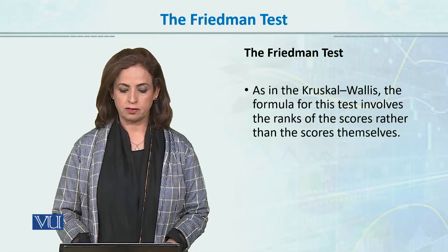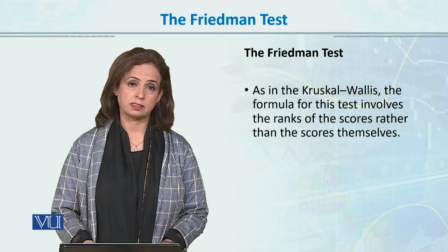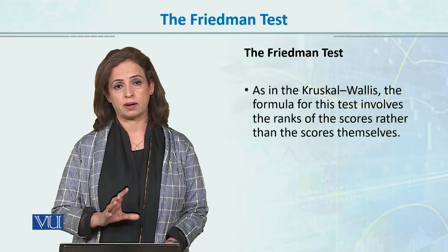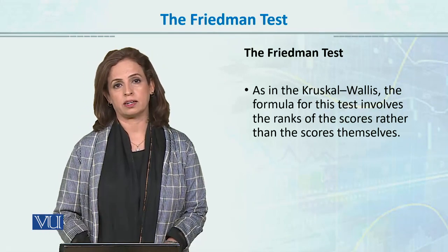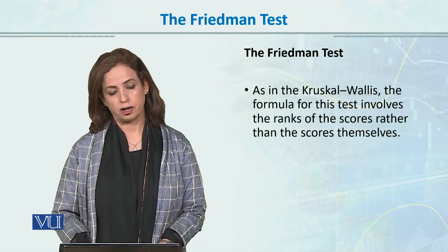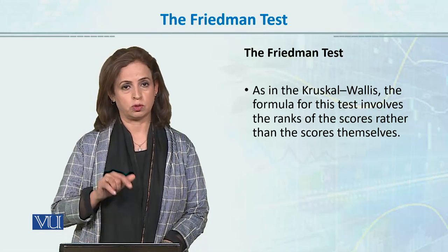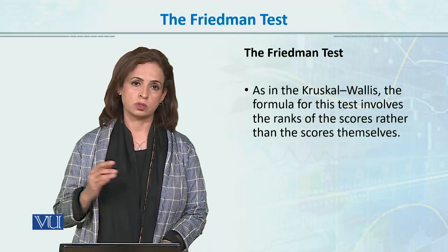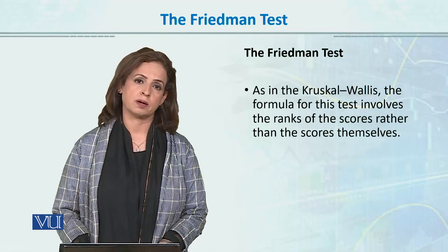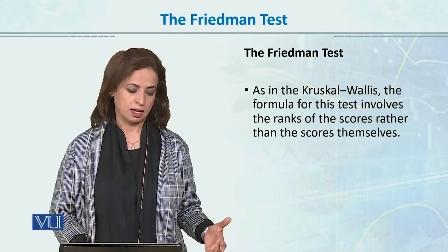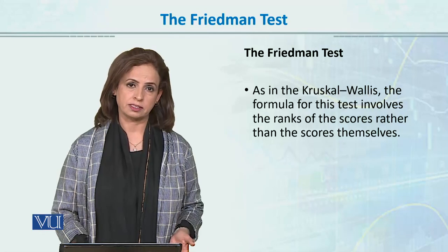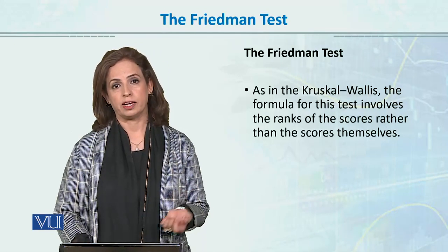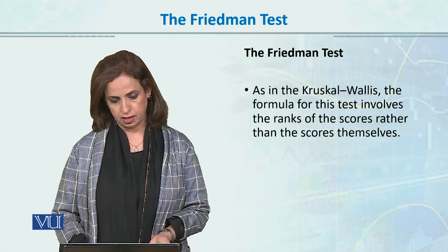As in Kruskal-Wallis, the formula for the Friedman test involves ranks — we convert scores into ranks, exactly as in Kruskal-Wallis. In the Friedman test, we score the three conditions by assigning ranks, then we calculate the mean ranks for the three levels, and then we calculate the test value through the formula.